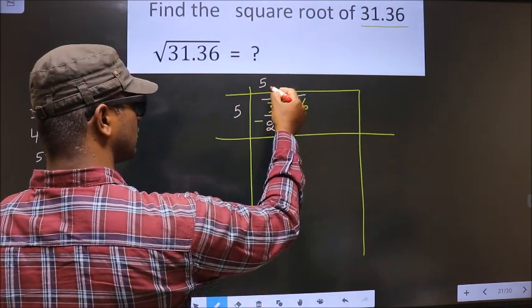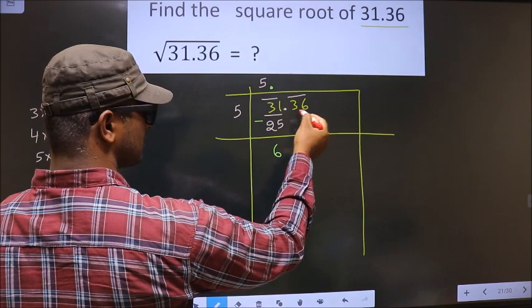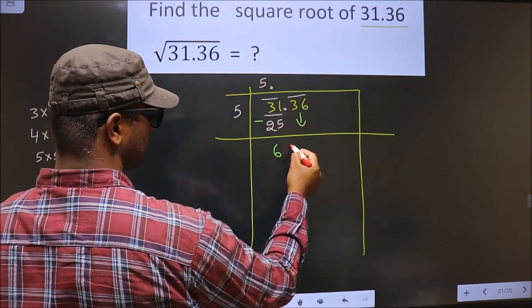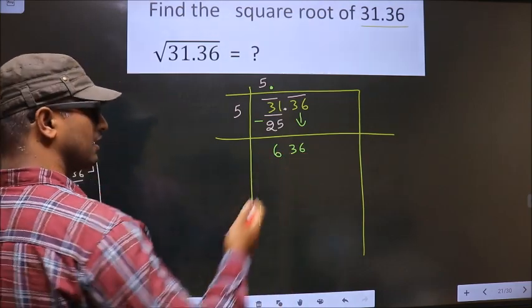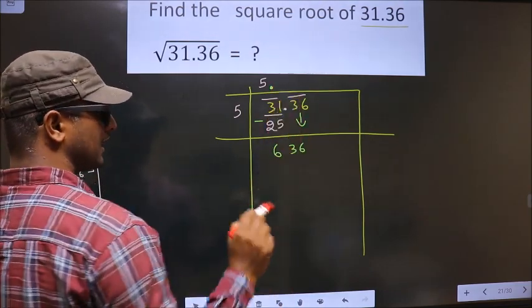Now here you have decimal. This you should put here, and this pair will come down making it 636. Again here, you should not put the decimal; the decimal shifted here.